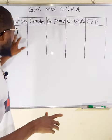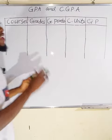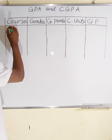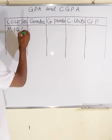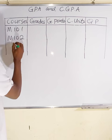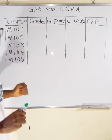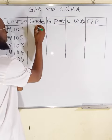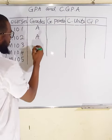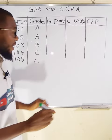So now let us write some courses at random to compute the GPA. We are in first year, first semester, and you registered for MARS 101, MARS 102, and MARS 103, for example. The grades obtained are: A, A, B, C, and C.